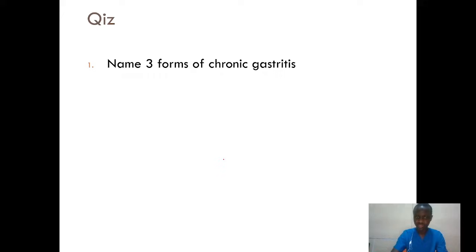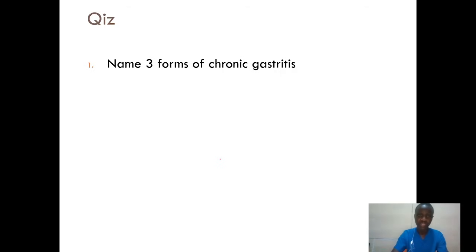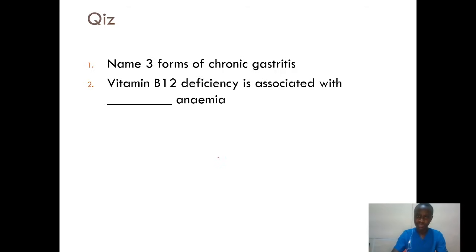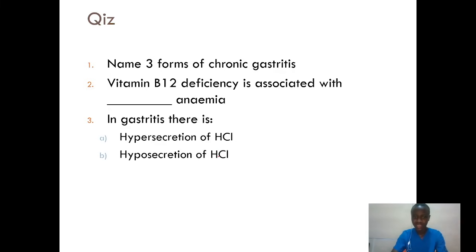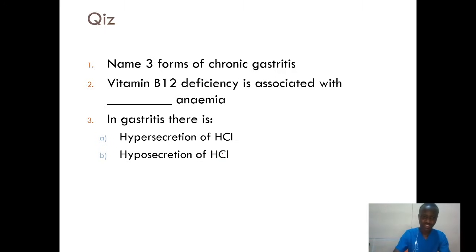For a recap of what we've been looking at: one, name the three forms of chronic gastritis. Two, vitamin B12 deficiency is associated with what type of anemia? Three, in gastritis, is there hypersecretion or hyposecretion of HCL? Remember the physiology we've covered.